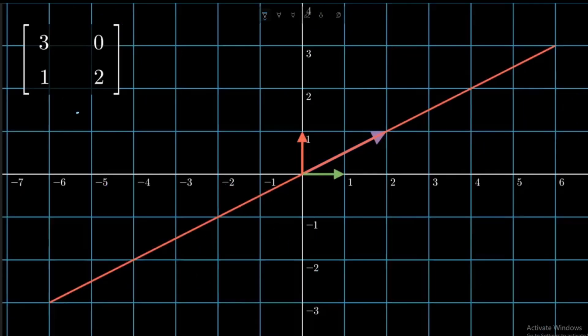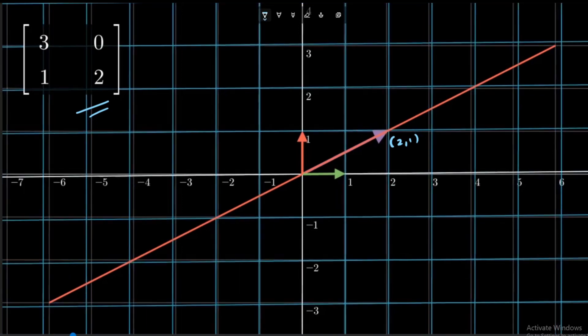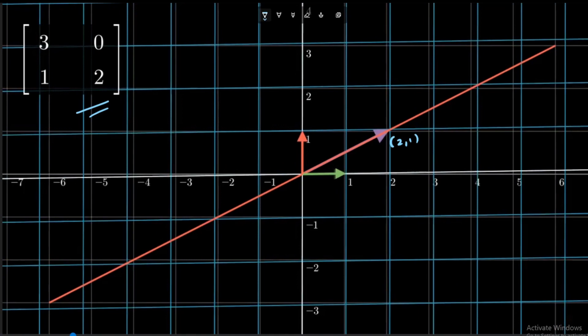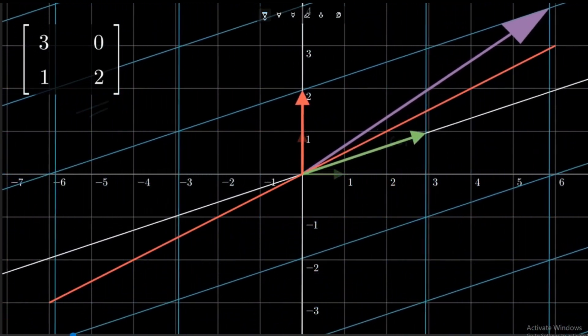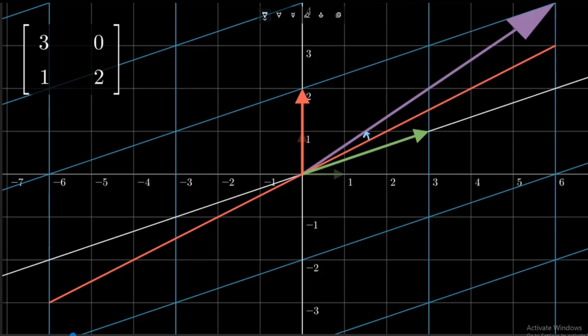Let us take an example of the transformation matrix [3,1; 0,2] and concentrate on the vector [2,1]. This orange line represents the span of vector [2,1], or the direction which vector [2,1] represents. Now what happens when this transformation is applied on this coordinate space? You will see that vector [2,1] not only changed its direction — it rotated slightly towards the left — but also increased in its magnitude. Similarly, the basis vector [1,0] also changed its direction, slightly moved towards the left, and increased in magnitude.